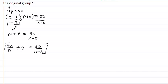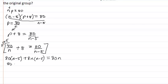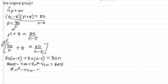We multiply by our LCD, which is n times n minus five. That gives us eighty times n minus five plus eight n times n minus five equal to eighty n. Expanding: eighty n minus four hundred plus eight n squared minus forty n equals eighty n. Since eighty n appears on both sides, they cancel, leaving eight n squared minus forty n minus four hundred equal to zero.